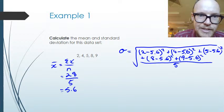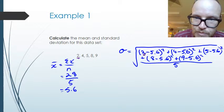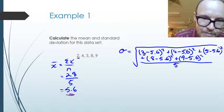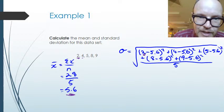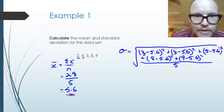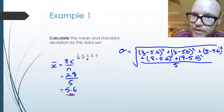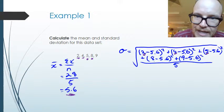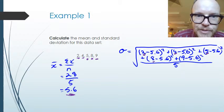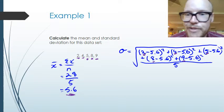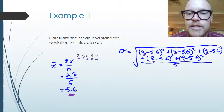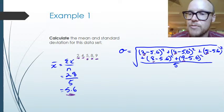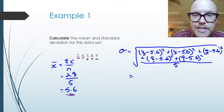So with our mean of 5.6, we take each score — 2, 4, 5, 8, 9 — subtract 5.6 from each, square each result, add them all together, divide by the 5 scores we have, and take the square root of the lot. Doing that, we find that the standard deviation is 2.6.